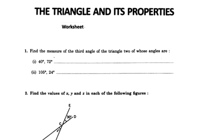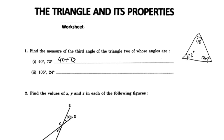Two of the angles are 40 degrees and 72 degrees. This is 40 degrees and this is 72 degrees — what is this angle? We use the angle sum property. 40 plus 72 plus x is equal to 180 degrees by the angle sum property.